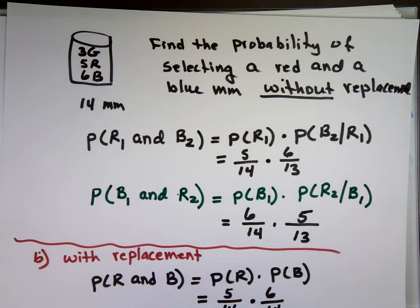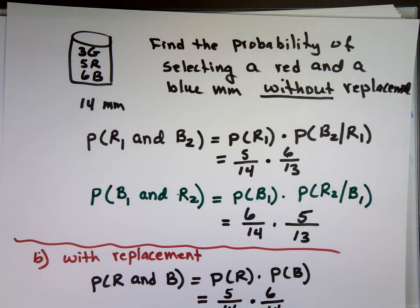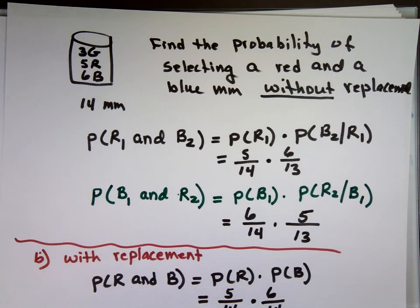Independent means the outcome of one does not affect the outcome of the other. One thing to remember: if your sample is really large, even if you do without replacement, you can treat the events as independent. Why? If you have 5,000 tires and you select two, and there are seven defects — that's 7 out of 5,000 the first time, then maybe 6 out of 4,999 the next. How much of a difference is that? Not much. So with a large sample, even without replacement, we treat the events as independent.